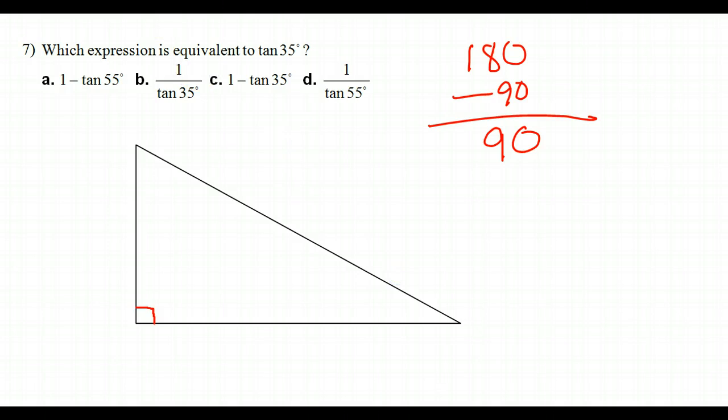I mean, look back at our 30, 60, 90 triangle. This was 60, we know this is 30, but it's because 60 plus 30 makes 90.